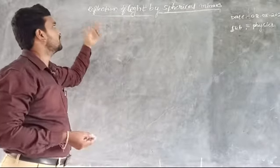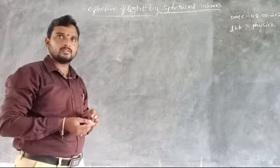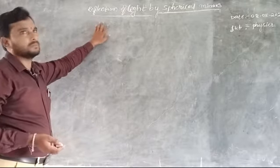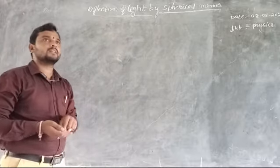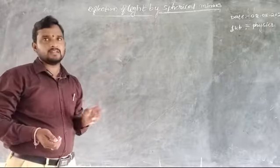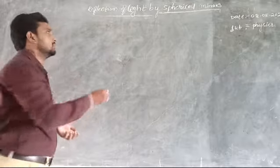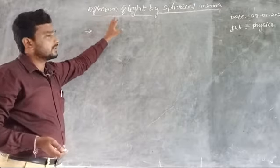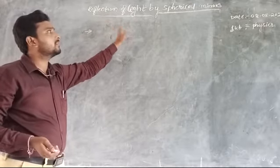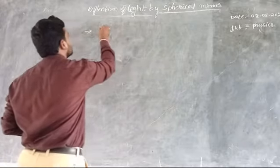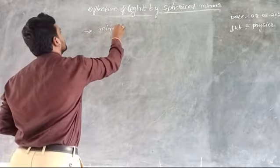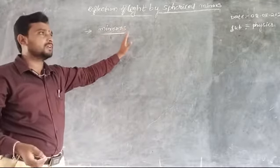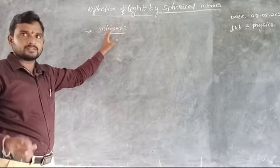Good morning. Today's topic is reflection of light by spherical mirrors. We already know the difference between lenses and mirrors. Let's write the definitions and differences between lenses and mirrors, the major differences, and how many types of mirrors there are. Today we discuss the properties of mirrors and their important parts.